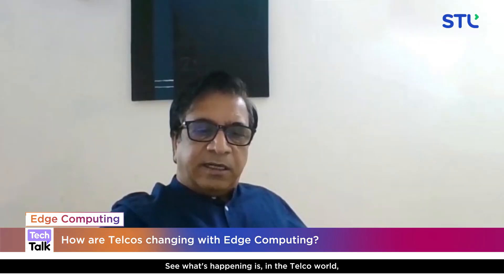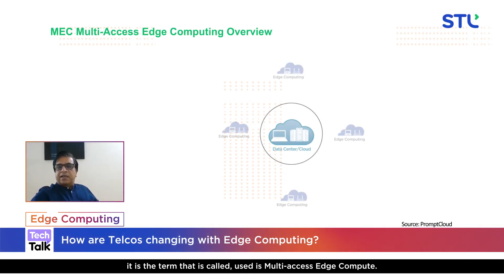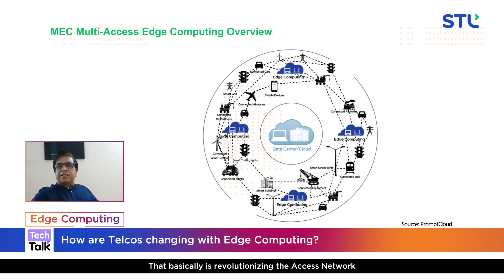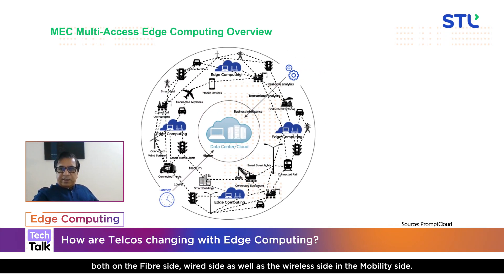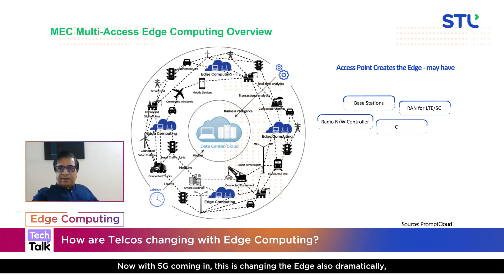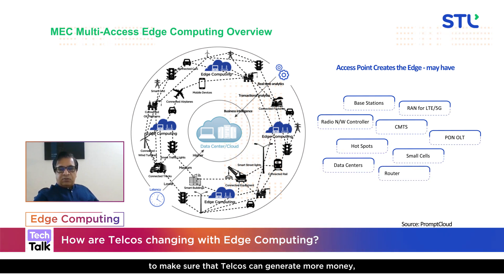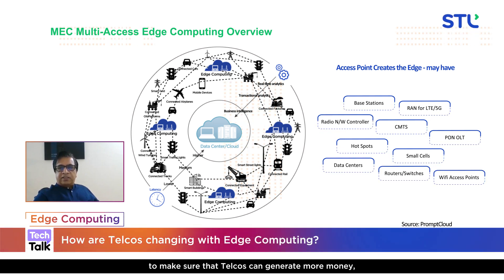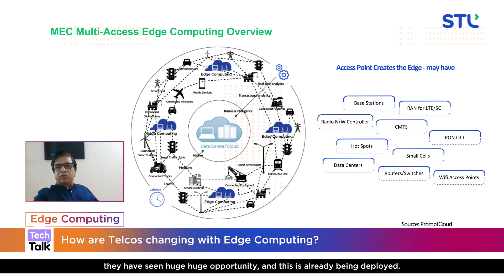What's happening in the telco world is the term called multi-access edge computing. That is revolutionizing the access network, both on the fiber side, the wired side, as well as the wireless side and the mobility side. Now with 5G coming in, it is changing the edge dramatically. There are a lot of things happening in the multi-access edge space to make sure that telcos can generate more revenue, make use of the huge number of use cases coming, and the new applications that are going to be run. They are seeing huge opportunity and this is already being deployed.